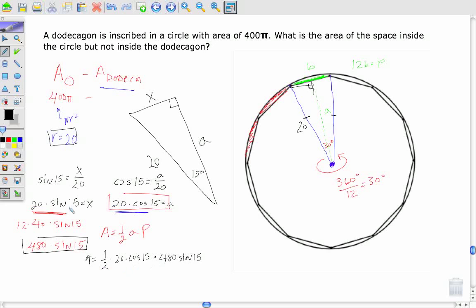Let's just do a little bit of simplifying. One-half times 20, that's equal to 10. And 10 times 480, that's 4,800. So my area is equal to 4,800 cosine of 15 times sine of 15.